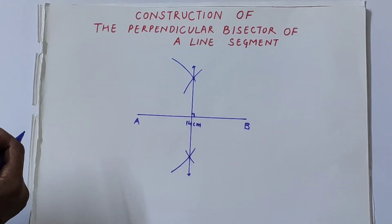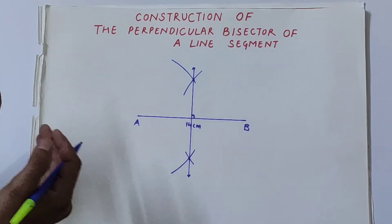So in this way, we can construct the perpendicular bisector of any given segment.